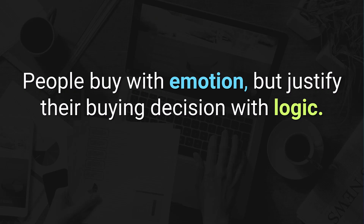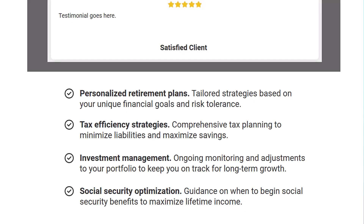The next section is a feature list. As you've heard, people buy with emotions but justify their buying decisions with logic. Therefore, we want to include a section with a list of features to satisfy the logical left brain of our prospect — just the raw facts of what you get. Using our financial planner example, their feature list might include: personalized retirement plans, tax efficiency strategies, investment management, and social security optimization.